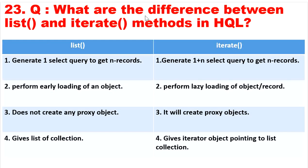The next question: what is the difference between list() and iterate() methods in HQL? The list() method generates one SELECT query to get N records, performing eager loading and returning a List collection without creating proxy objects. The iterate() method generates 1+N SELECT queries — one for the parent object and N queries for all child objects — performing lazy loading and creating proxy objects. The iterate() method returns an Iterator pointing to a list of collections.